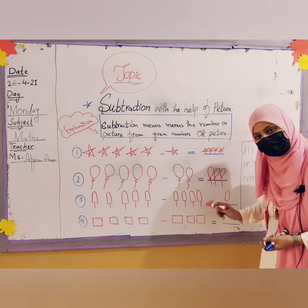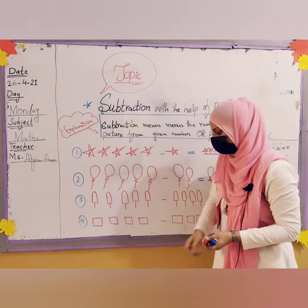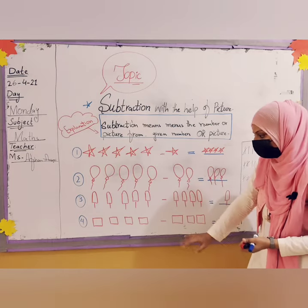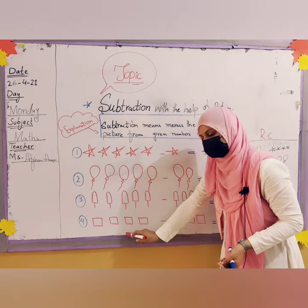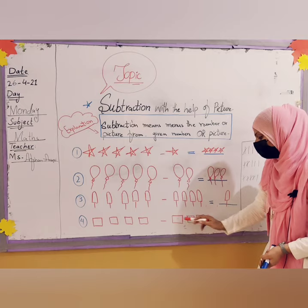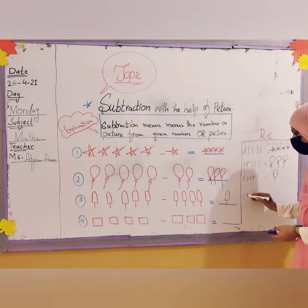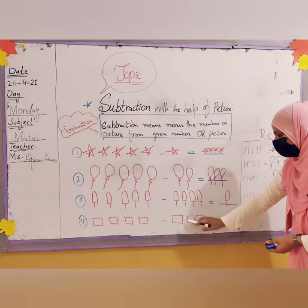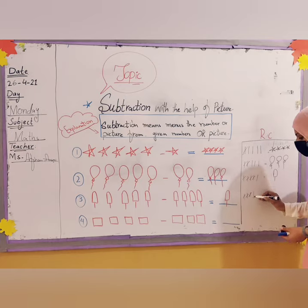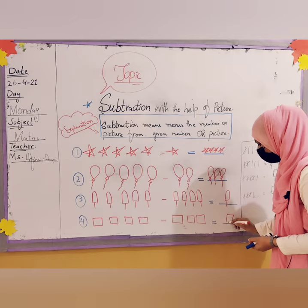Point number four: I have drawn some boxes — four-cornered shapes. Count: one, two, three, four boxes, and the sign is minus. You have to minus three from four. Draw four lines, cross out one, two, three — only one box will remain. Draw one box as the answer.